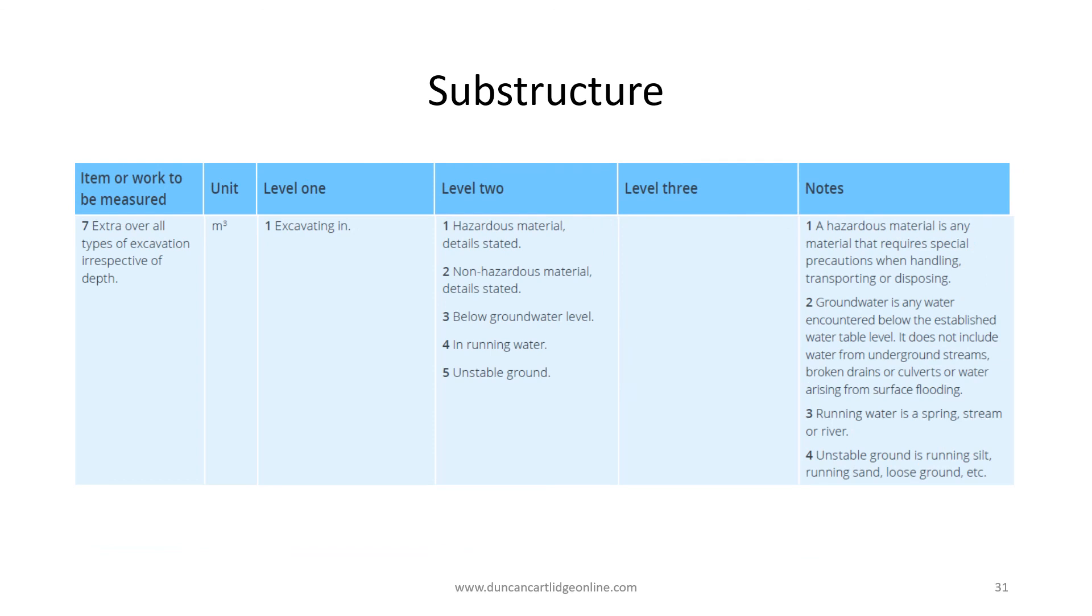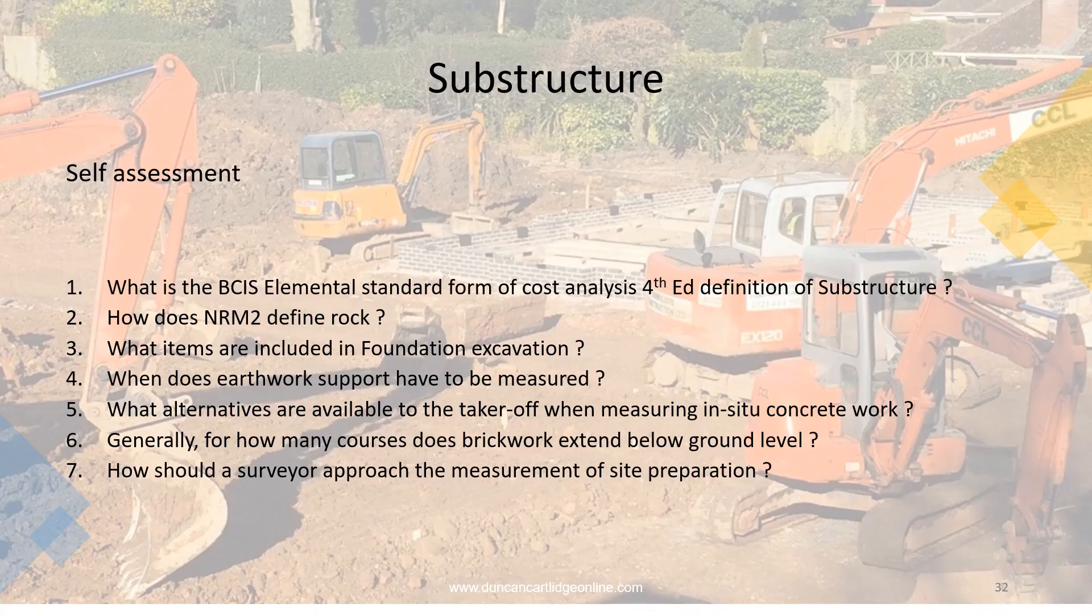Whereas in the 2nd edition of NRM2, earthwork support is measured to the faces of all excavation over 250mm deep. Earlier, I mentioned that the ground was infinitely variable. If items such as those listed on this page are measured, then they are measured as extra over on the excavation on which they occur.